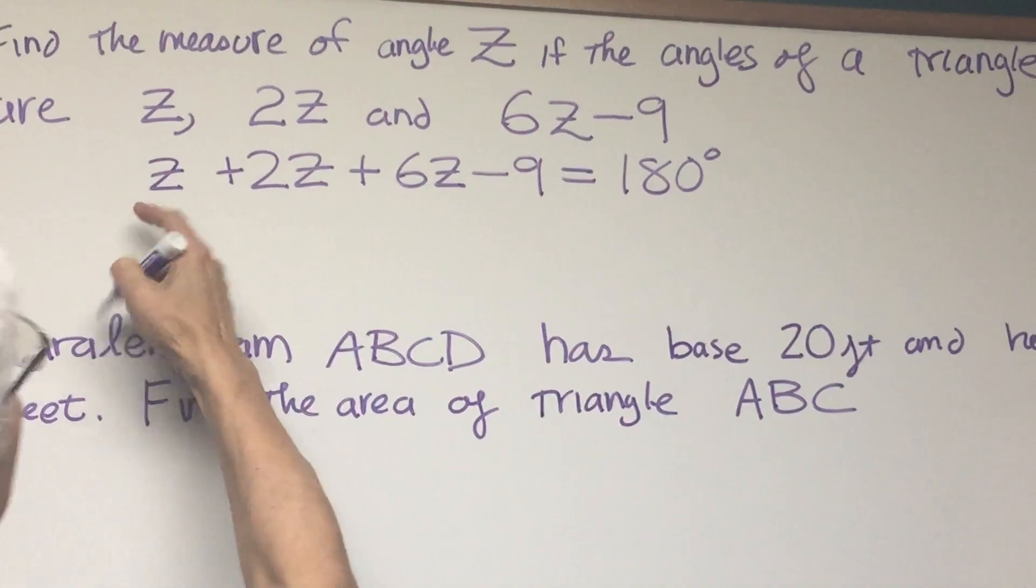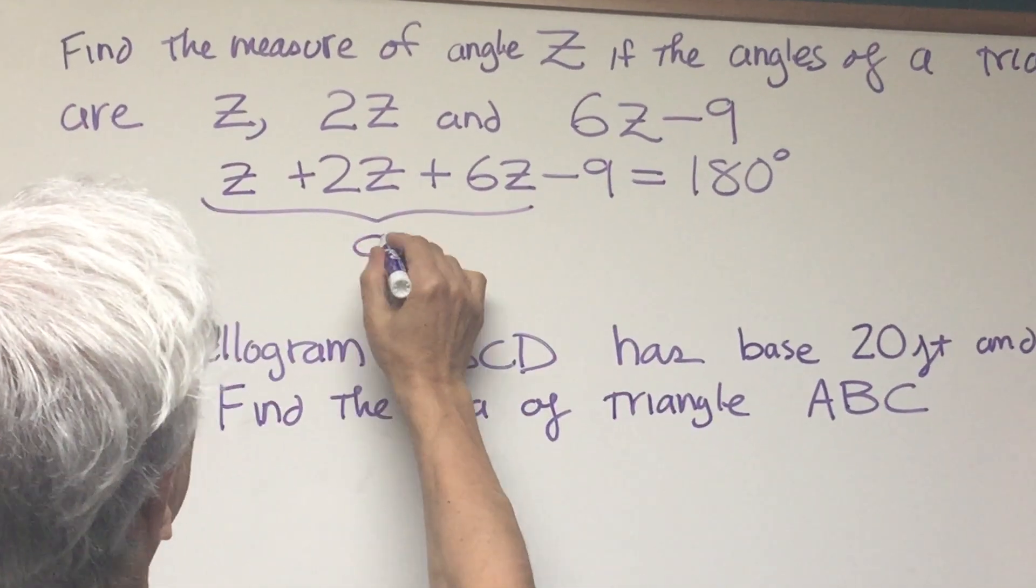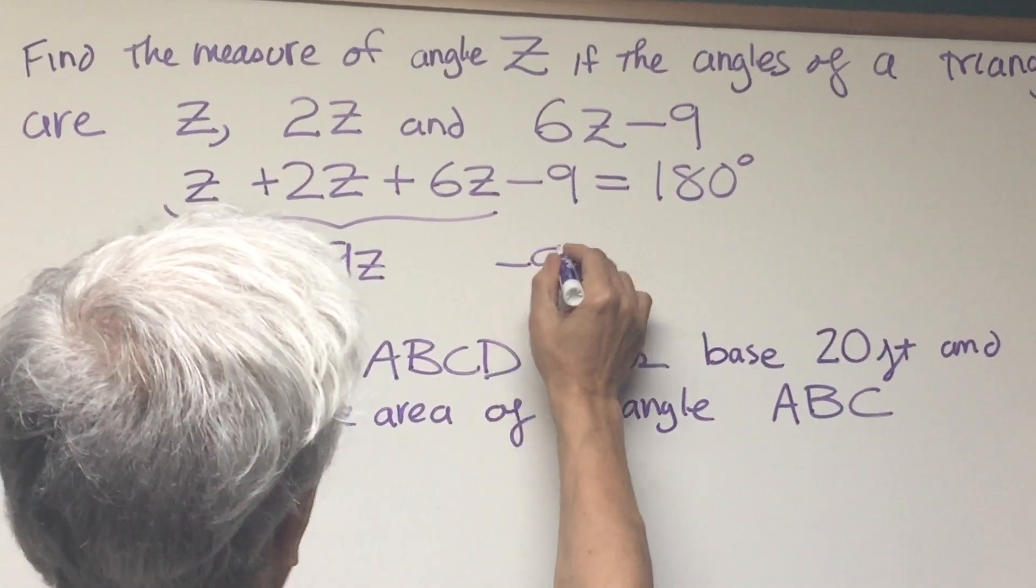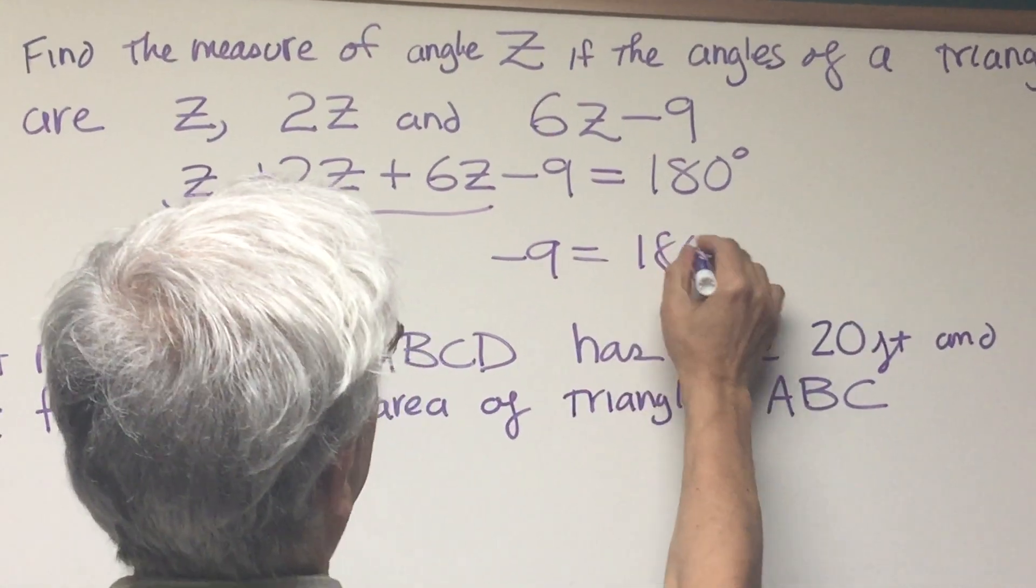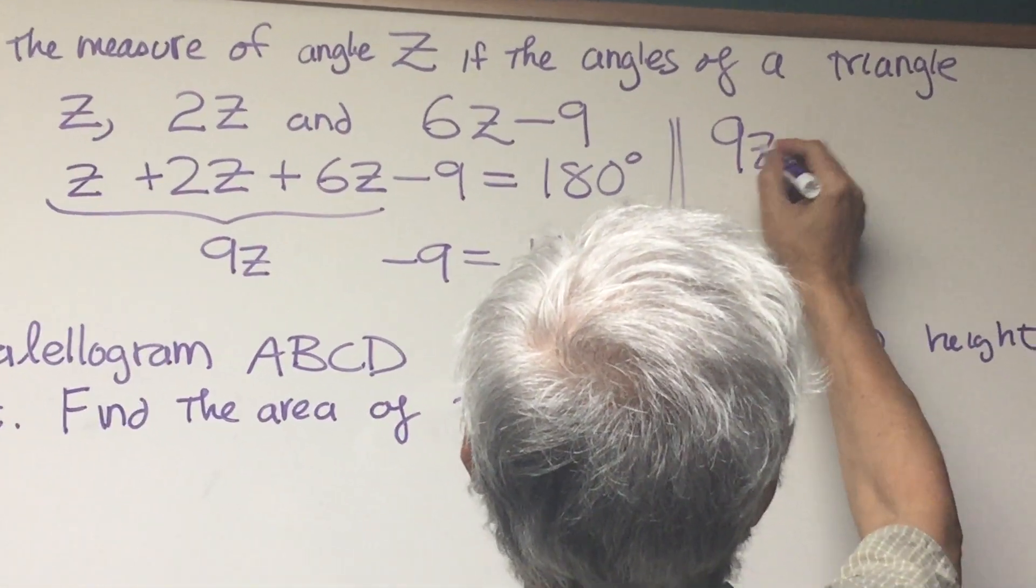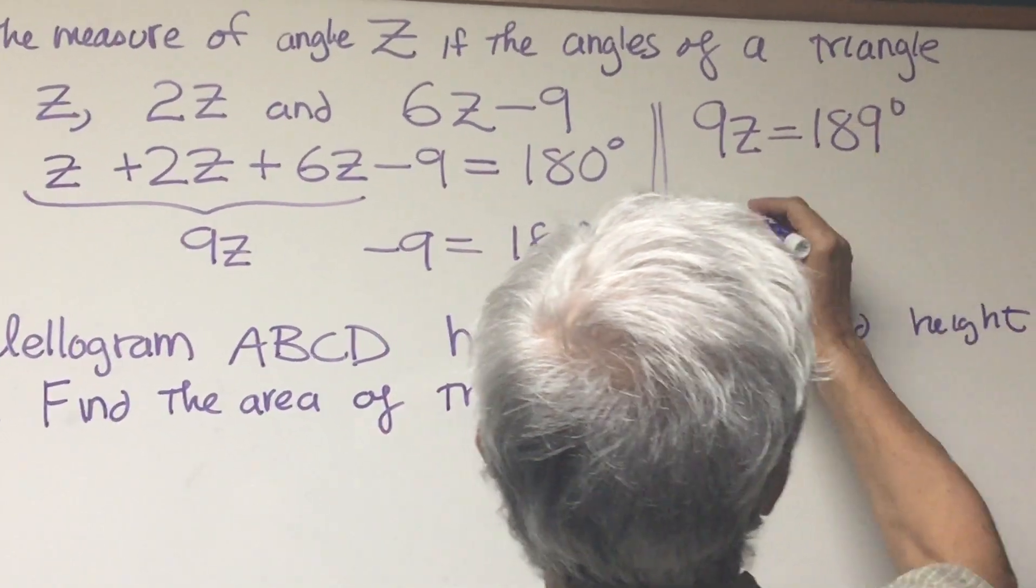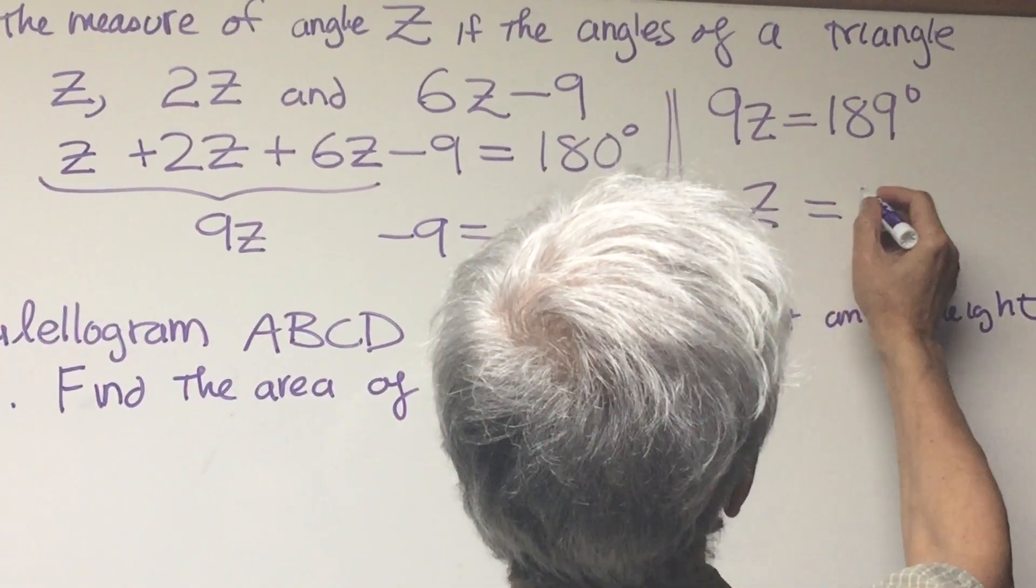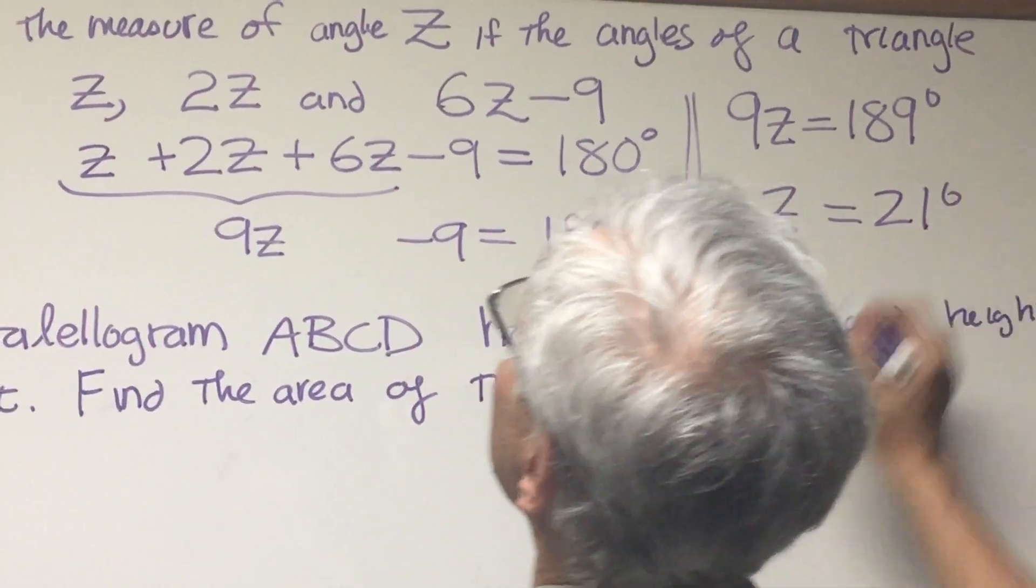So add the three Z terms here, we get 9Z minus 9 is 180 degrees. Bring this over to the second column, 9Z is 189 degrees, and therefore Z is equal to 21 degrees.